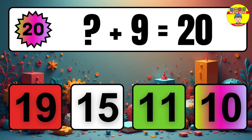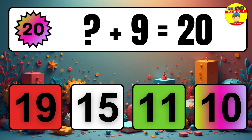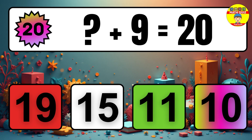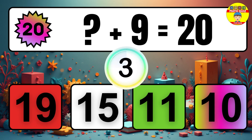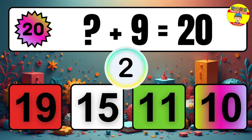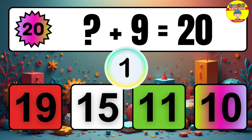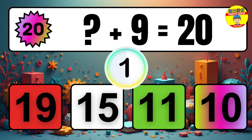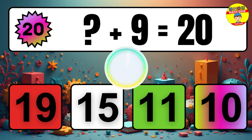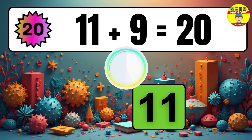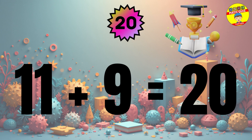Question 20. What number plus 9 equals 20? The missing number is 11.